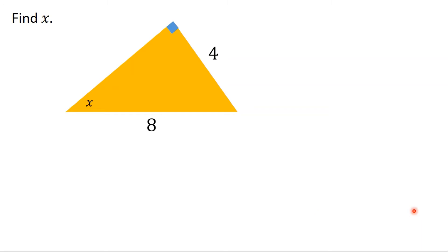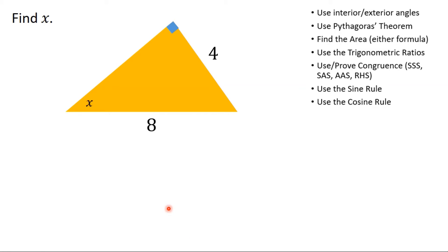Here's an example — find x. At GCSE level most questions are a bit wordier, but I've tried to bring out the core of what a question would be asking. I can see that I have a right angle triangle — the square in the corner means it's a right angle — so automatically I'm thinking either Pythagoras or the trig ratios. Looking closer, I notice I have an angle and two sides, which is exactly what I need for the trigonometric ratios, so I think I'm going to be using SOHCAHTOA.